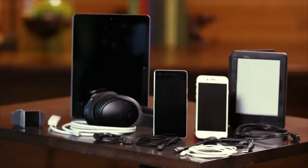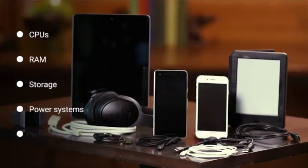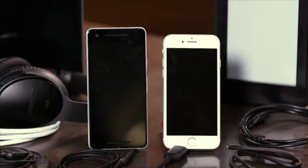Let's talk about mobile devices. Mobile devices are computers too — they have CPUs, RAM, storage, power systems, and peripherals. How are they different from a server, desktop, or laptop? They're special because they're mobile: portable and usually powered by batteries. Some mobile devices are general-purpose computing devices like tablets or smartphones. Others are optimized to perform a specific set of tasks, like fitness monitors, e-readers, and smartwatches.